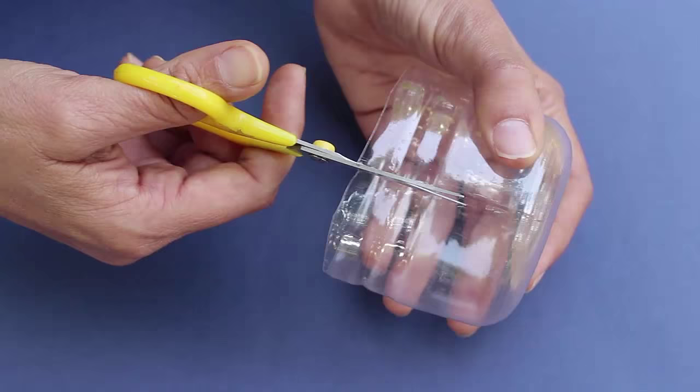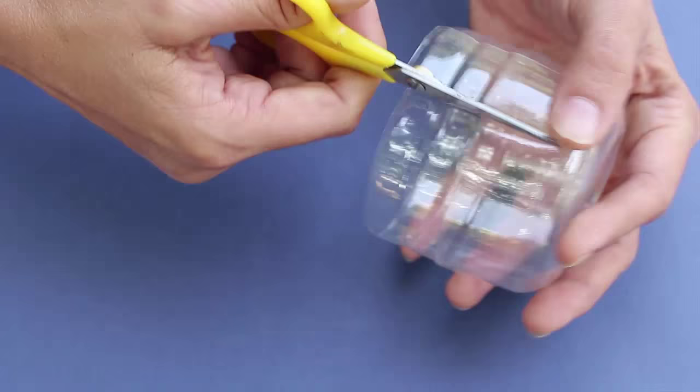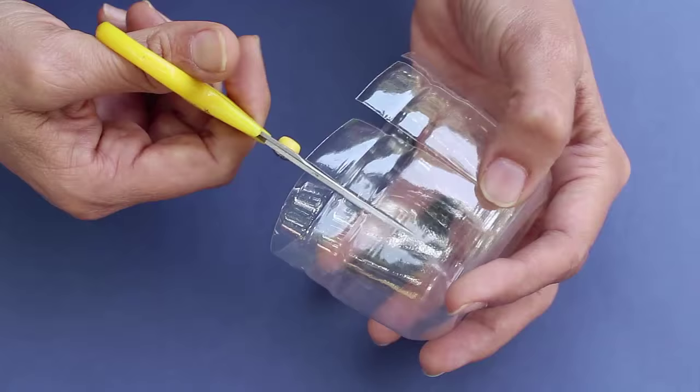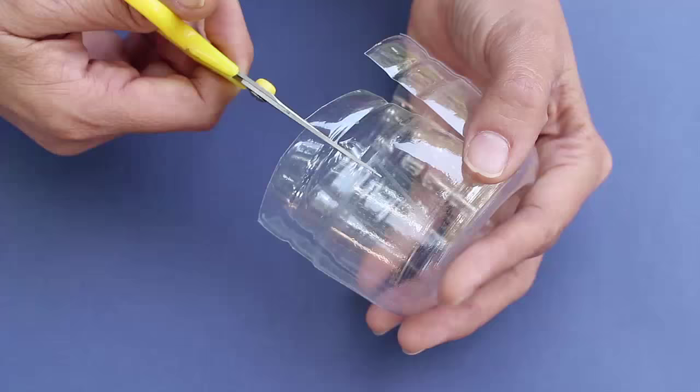Now you can mark 10 equally spaced lines. And then cut these 10 equally spaced lines on the lower end of the bottle. Start from the rim and go right up to the base.